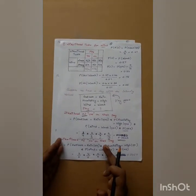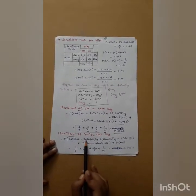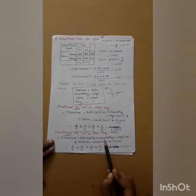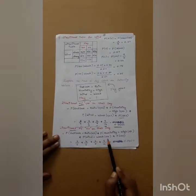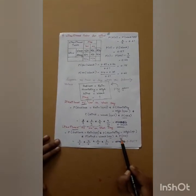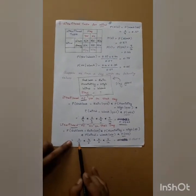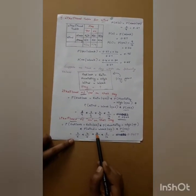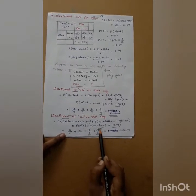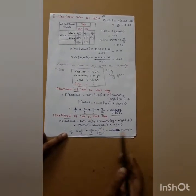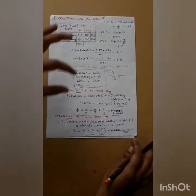For the no class: the probability of outlook equals rain given no, humidity equals high given no, and wind equals weak given no are computed similarly. The values are 2 by 5, 4 by 5, and 2 by 5 respectively, with the prior probability of no being 5 by 14. Multiplying all these values gives a likelihood for no of 0.0457.